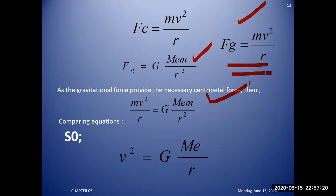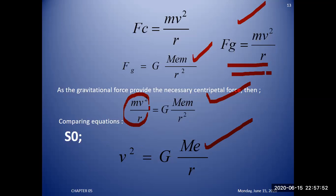If you compare these two forces, centripetal force is provided by gravitational force. You compare the gravitational force formula with the centripetal force formula and solve for velocity. This velocity is the required velocity to revolve the object in a circular path of radius r. The centripetal force comes from the gravitational force acting on a body of mass m above the surface of the earth, and when you compare these two forces you calculate the velocity required.